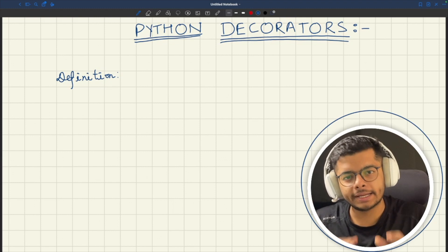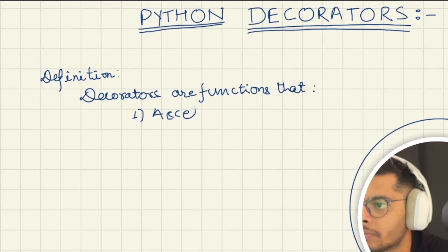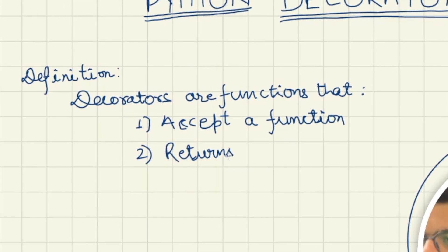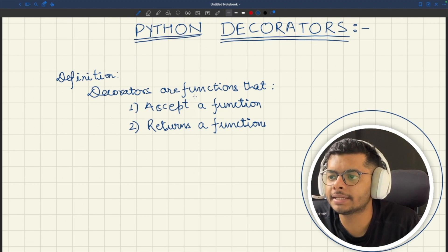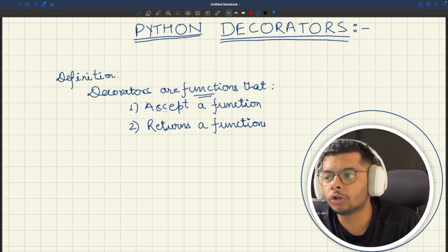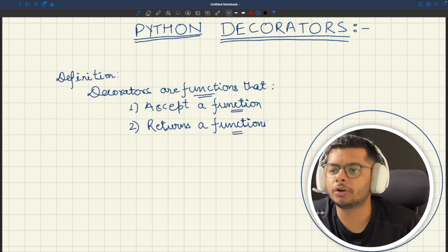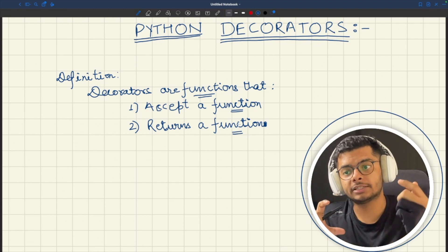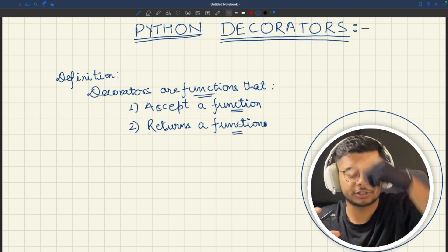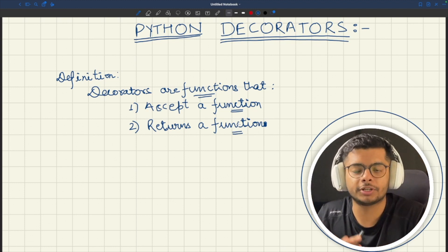So let's see a more technical definition of decorators. Decorators are basically functions that accept a function and also return a function. So a decorator is a function that is going to accept an argument as a function and is going to return a function — we will see what these functions are.